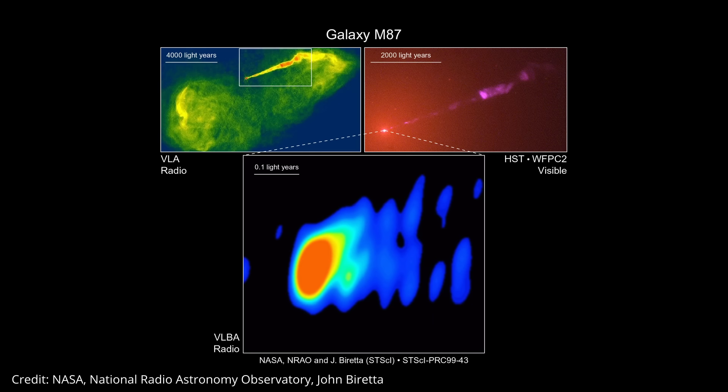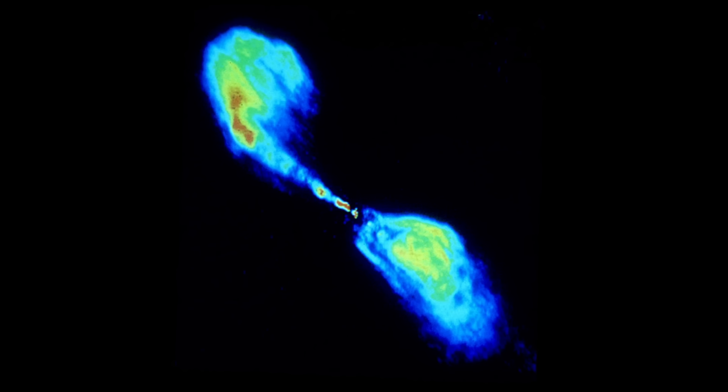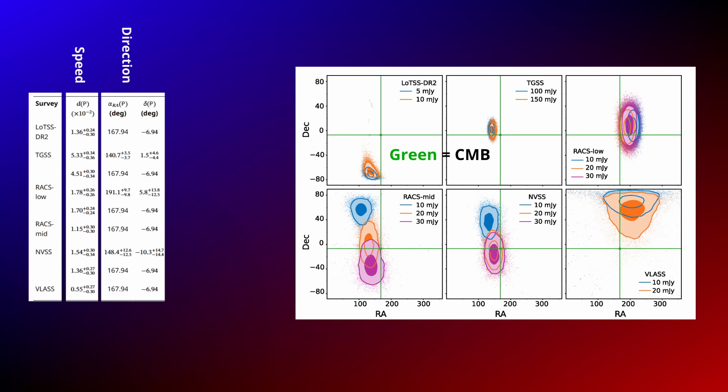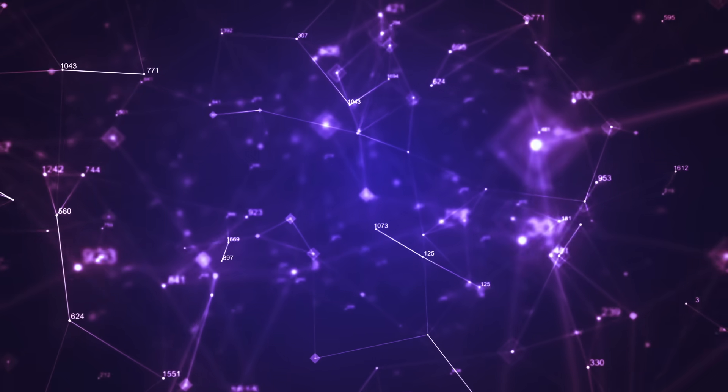When you detect a radio galaxy, you aren't always seeing a single clean point of emission. Many radio galaxies have jets, lobes, and hotspots. And depending on the resolution of the telescope, they can show up as separate blobs on the sky. So instead of listing one galaxy, the catalogue might accidentally list two or three pieces of the same object. Now for decades, the standard method for extracting a dipole from radio surveys relied on a simple idea. Count the number of sources across the sky and look for a slight axis in one direction. The whole method assumed every source was independent. One object, one count, one data point.